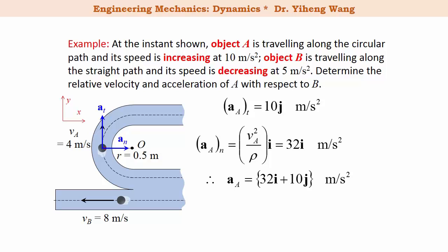For object B, it is doing rectilinear motion, its speed is decreasing at 5 m per second squared, which means that its acceleration is in the opposite direction of its velocity. Since its velocity points to the left, the negative x direction, therefore the acceleration of object B points to the right, or positive x direction, being 5i.